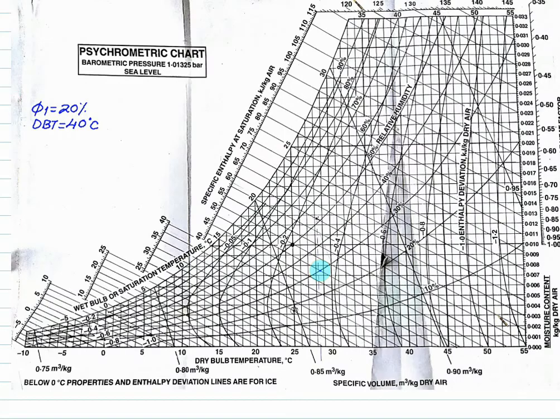On this graph we have to first look at 40 degrees Celsius. So 40 degrees Celsius is here. So this line represents the 40 degree Celsius line. 20% RH is this line. So this point represents point number 1.